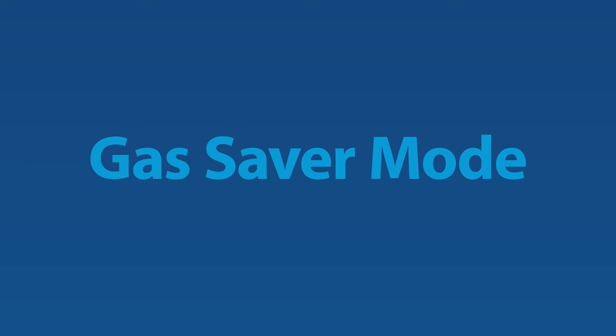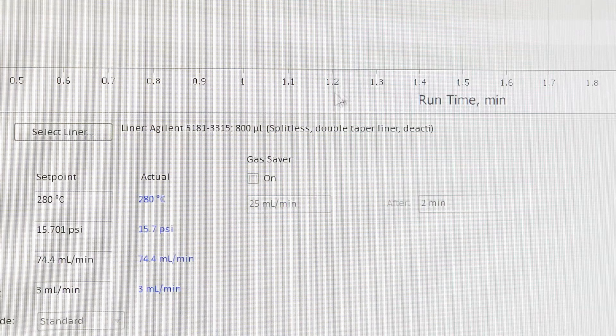Gas Saver Mode. Did you know your GC has a mode to reduce helium usage? It's often called Gas Saver Mode or Carrier Gas Saver. But what does it do?